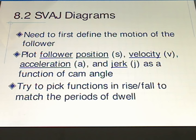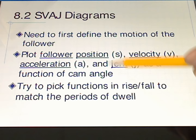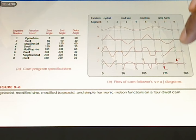Now let's turn our attention to the SVAJ diagram. When designing a cam, we first define the motion of the follower. We plot the follower position S, the follower velocity V, acceleration A, and jerk J — all as functions of the cam angle. As the cam rotates, we examine the follower's position, velocity, acceleration, and jerk. Jerk is the derivative of acceleration, just as acceleration is the derivative of velocity. Our goal is to pick functions during rise and fall to match the periods of dwell.